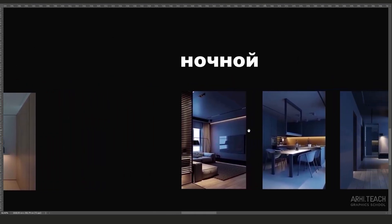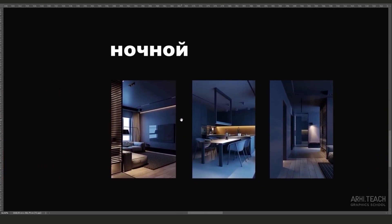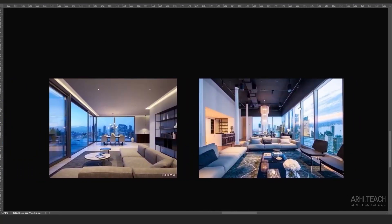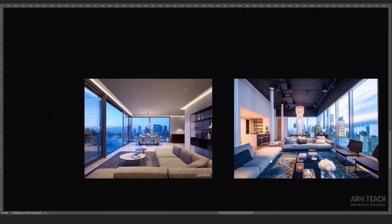Let's talk about nighttime lighting. There can be several scenarios, but in any case we always have blue fill light from the window and an artificial light source. In one case it can be accentuated — we immediately pay attention to it, even if all the light sources are turned on, like the backlight, the built-in light, and the floor lamp. The accent is still on one. But there is also a second approach where the artificial light source is the fill light. Which option to choose depends on the task at hand.